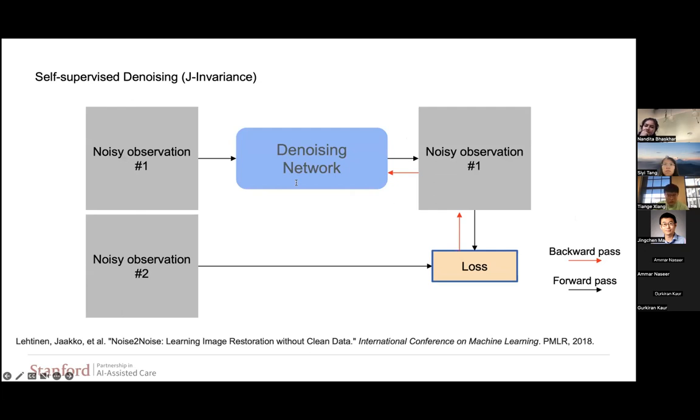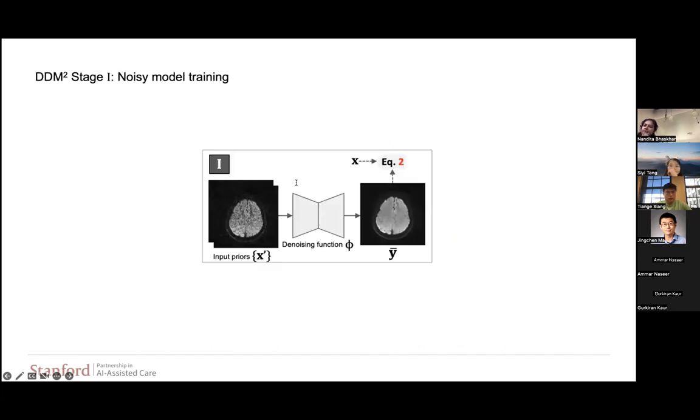After we formulate how to generate the clean image based on our input, another problem is that how can we unsupervisedly train a denoise network without any ground truth data? This kind of method has been proposed a long time ago. For example, we have this J-invariance strategy that was proposed in noise-to-noise back in 2018. The idea of J-invariance is that we can assume noise are independently sampled from the same distribution and different noisy observations actually represent the same underlying pattern. So we can supervise the training of the denoise network through different noisy observations, so no clean ground truth is required in this case.